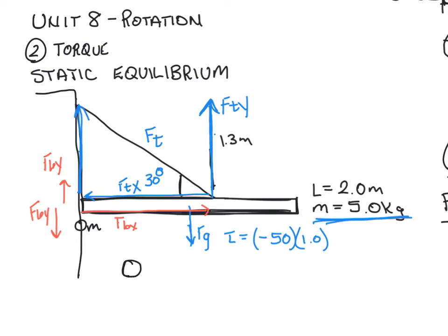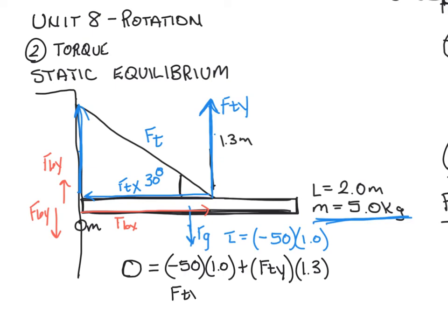First we sum up net torques to determine whether the building's force in the y direction is positive or negative. Since the beam isn't moving, net torque equals zero. We sum up the two torques: the force the beam exerts on itself, and the force the rope exerts in the y direction on the beam. We can now solve for the vertical force of the rope on the beam — the force of tension in the y direction equals 38.5 Newtons.